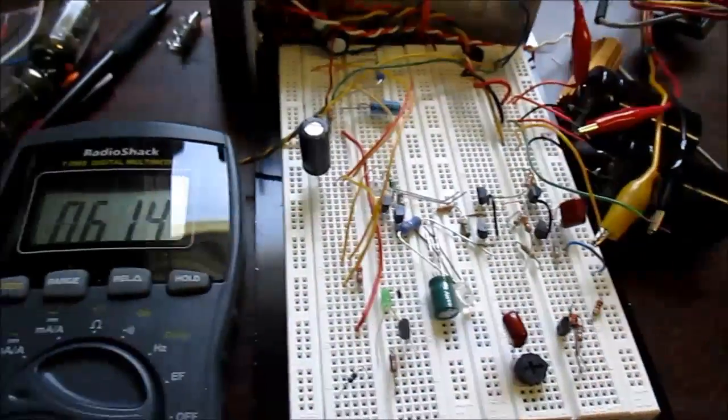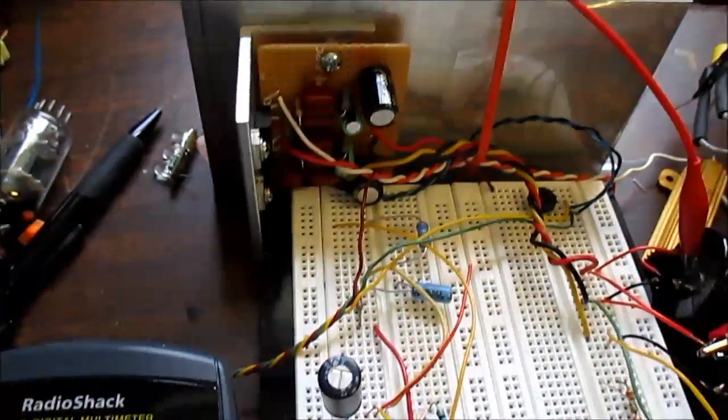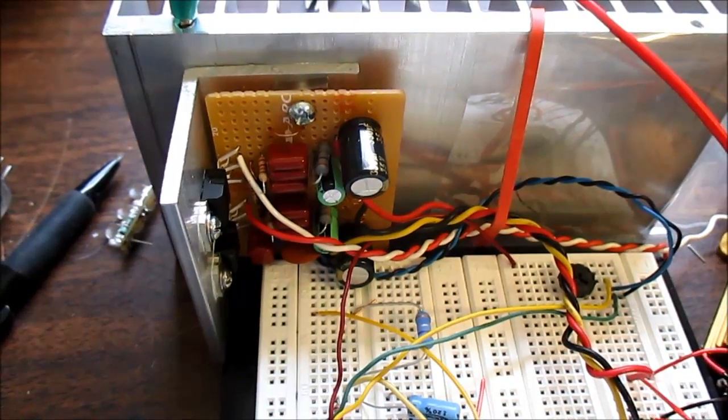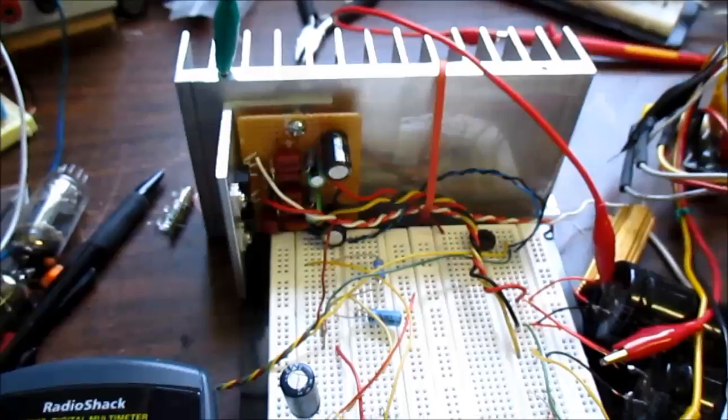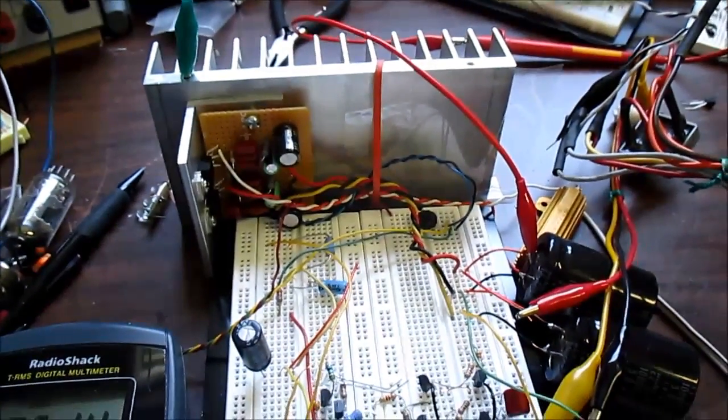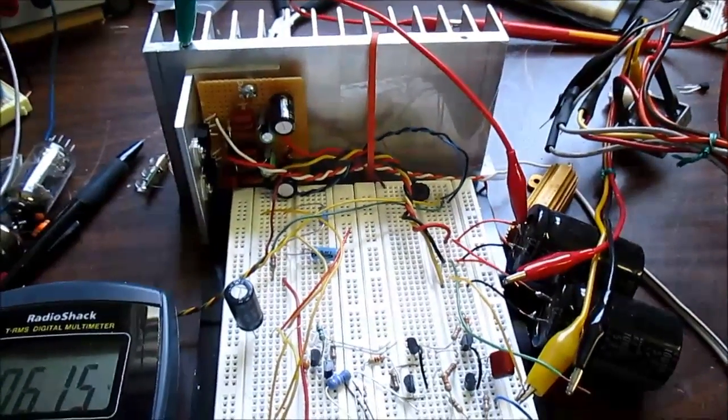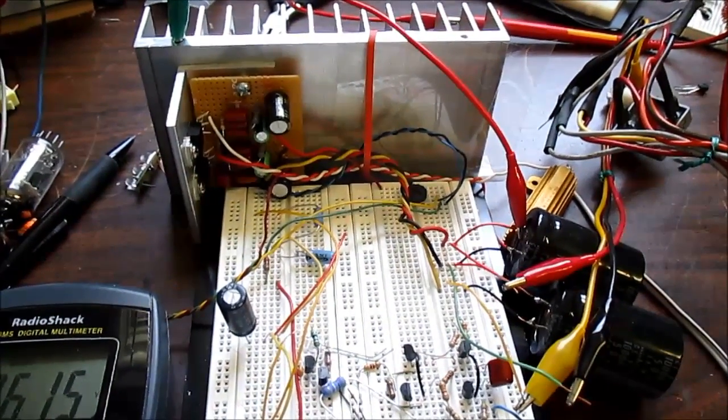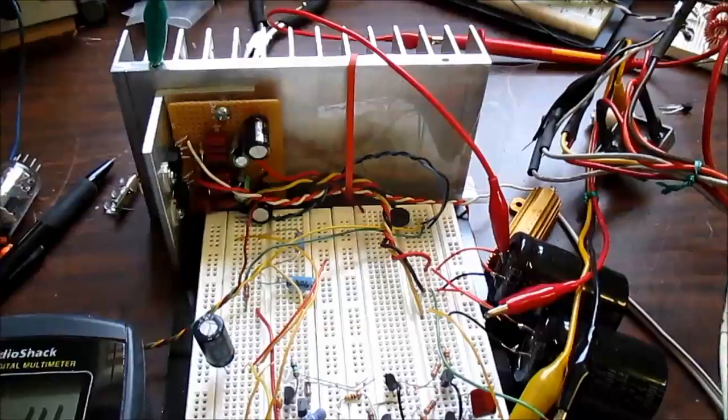So right now I'm running about 6 volts. That's kind of a neat thing with the 2050 chip. It'll run at very low voltages. So if you had a situation where you didn't have enough voltage, you can still run the amplifier. Of course, the power would be limited.